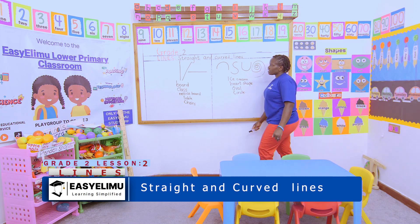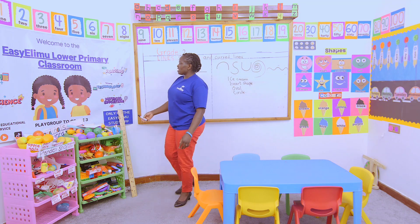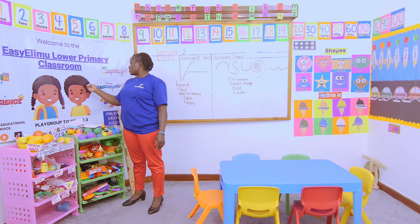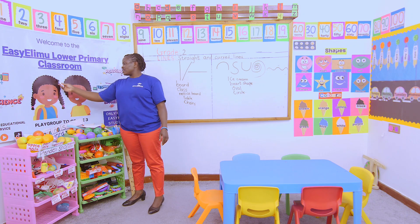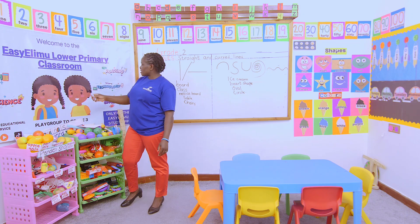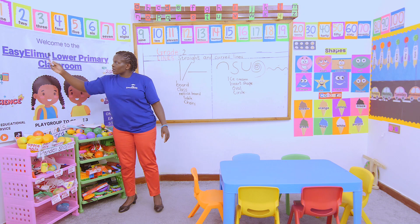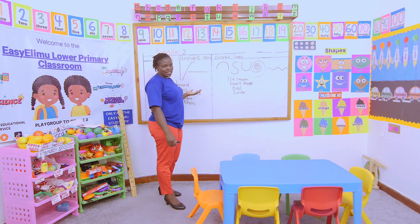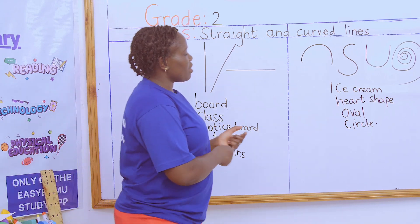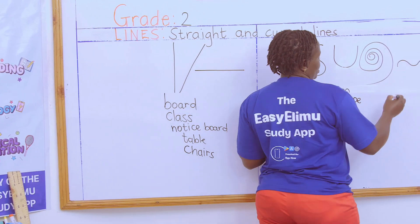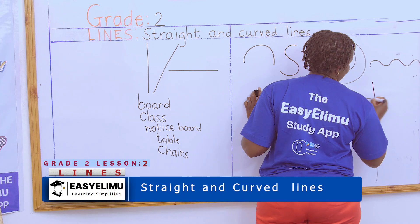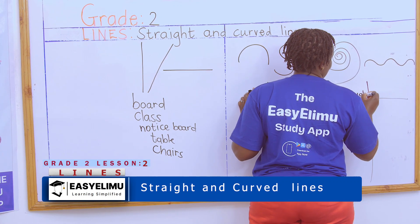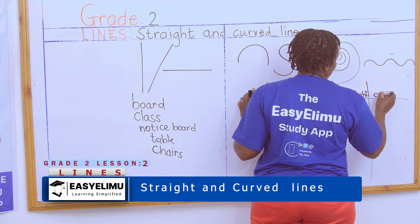So we have several things in our class that have curved lines. When you look at the faces of these children, they have curved lines. Look at their hair — curved lines. Look at the letters and numbers in our classroom — some of them have curved lines. Today I want us to go home and identify things that have straight lines at home, and things that have curved lines at home.